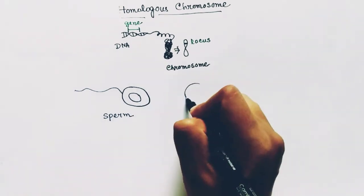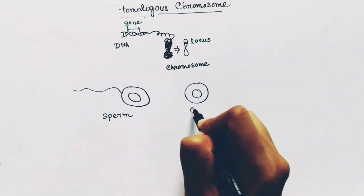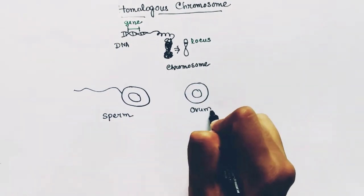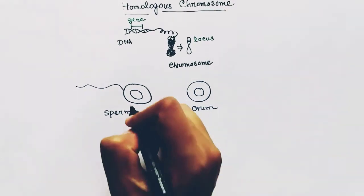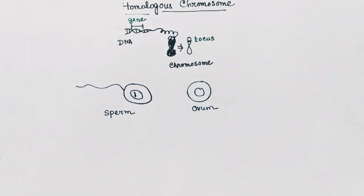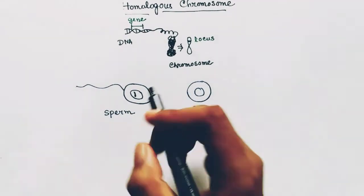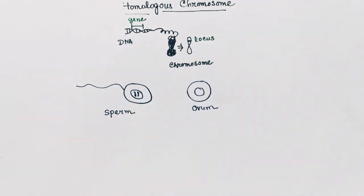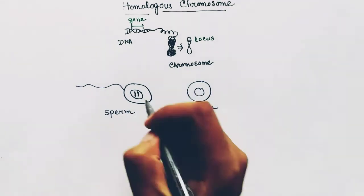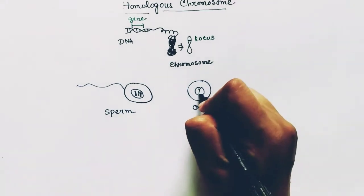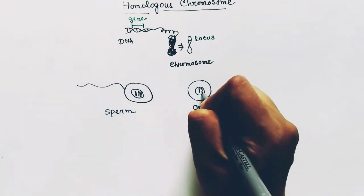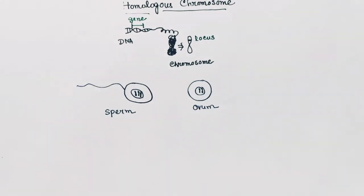They are called homologous because the locus of the gene is the same in both chromosomes. Among these two homologous chromosomes, one comes from the father and the other comes from the mother. Let's take a species which is a diploid species having total six chromosomes.